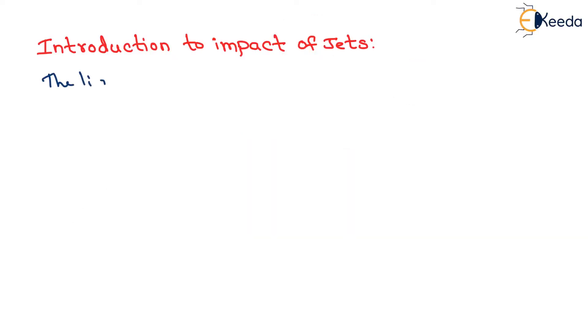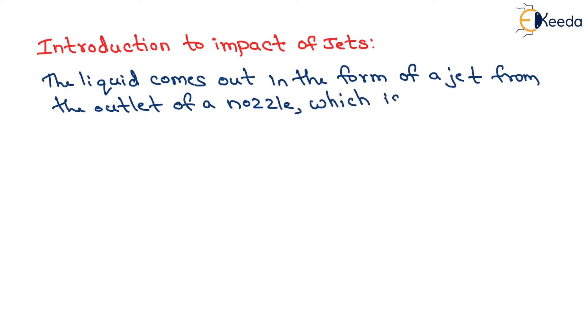The liquid comes out in the form of a jet from the outlet of a nozzle which is fitted to a pipe through which the liquid is flowing under pressure.